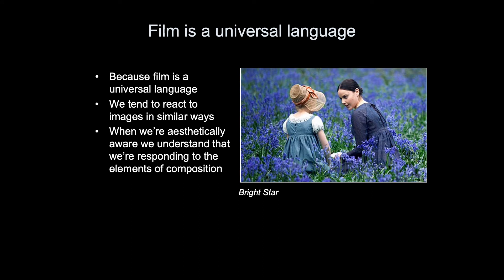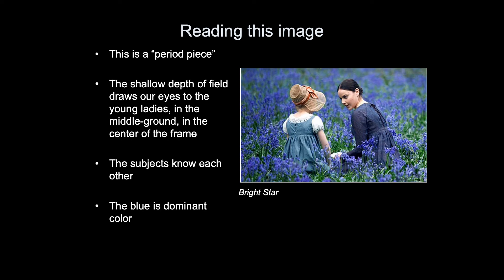Because film is a universal language, we tend to react to images in similar ways. When we're aesthetically aware, we understand that we're responding to the elements of composition. Reading this image: this is a period piece. The shallow depth of field draws our eyes to the young ladies in the middle ground, in the center of the frame. The subjects know each other, and the dominant color is blue.